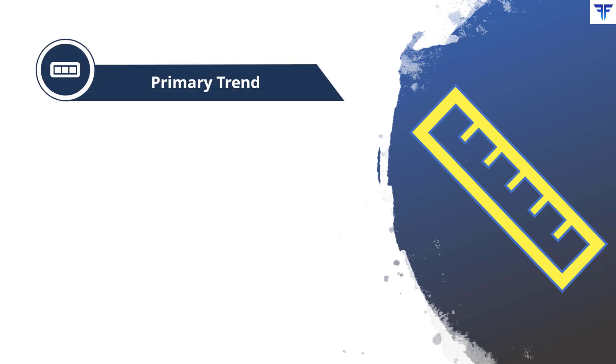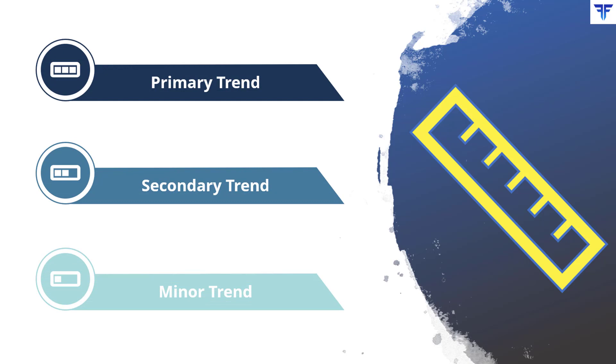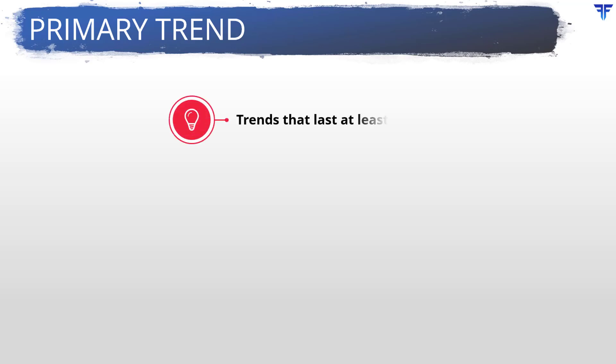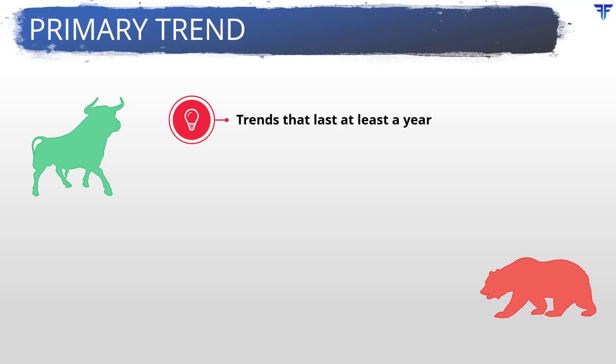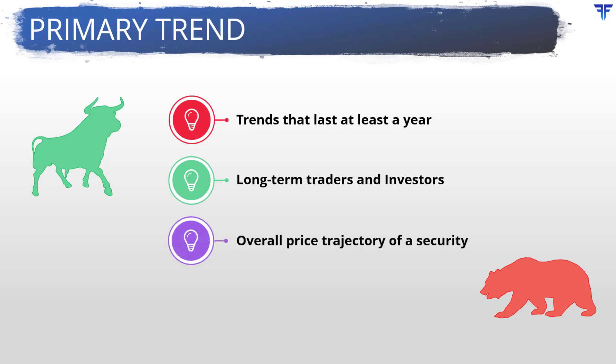Let us now talk about the length and the magnitude of the trend. A trend can roughly be classified into three categories: primary, secondary, and minor. Primary trend is a trend that usually lasts a year or more; sometimes a primary trend can last for three or four years as well. When you hear people say bull market and bear market, they are usually referring to the primary trend of the overall market. These trends are more suited to investors and long-term traders — they tell about the overall price trajectory of the security. A primary trend can be identified on the weekly and monthly timeframe.